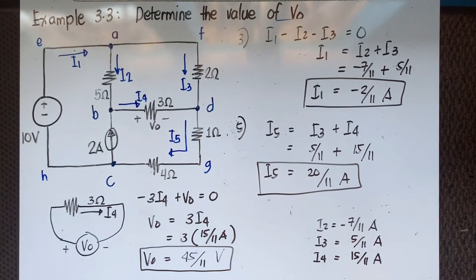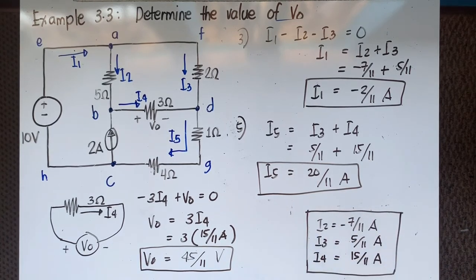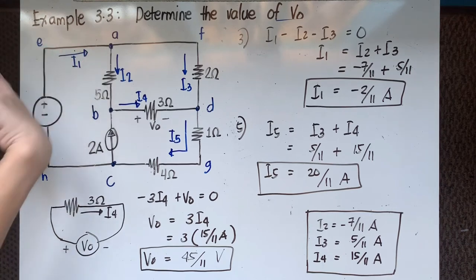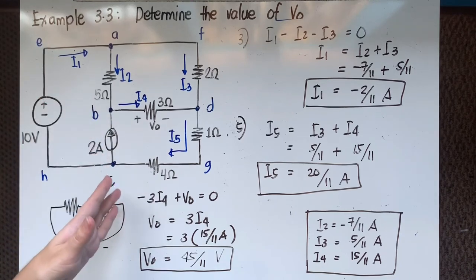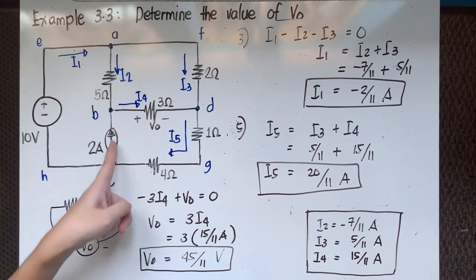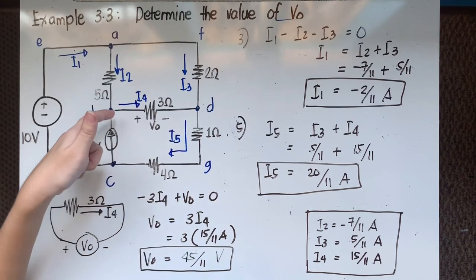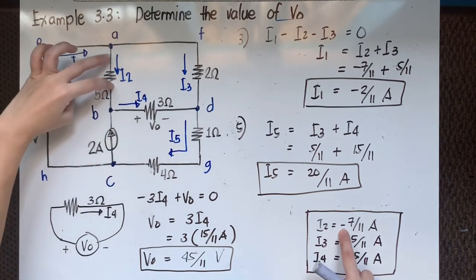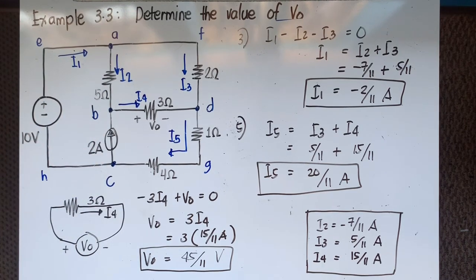The negative sign for I1 means its actual direction is opposite to what we assumed — the 2-ampere current source is the main supply, driving current rightward through I4, upward through I2 (hence it is negative in our assumed direction). Our final answer is V sub O = 45/11 volts.